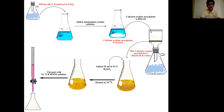The pictorial procedure for calcium determination: filtrate B is transferred to a flask and ammonium oxalate solution is added. The calcium present in the sample precipitates as calcium oxalate, which is filtered through a funnel. The calcium oxalate precipitate is dissolved in water with 25 ml of 14 N H₂SO₄ added, heated at 70°C, and the resulting solution titrated with 0.1 N KMnO₄ solution. The burette reading is used to estimate the amount of calcium in the face powder.